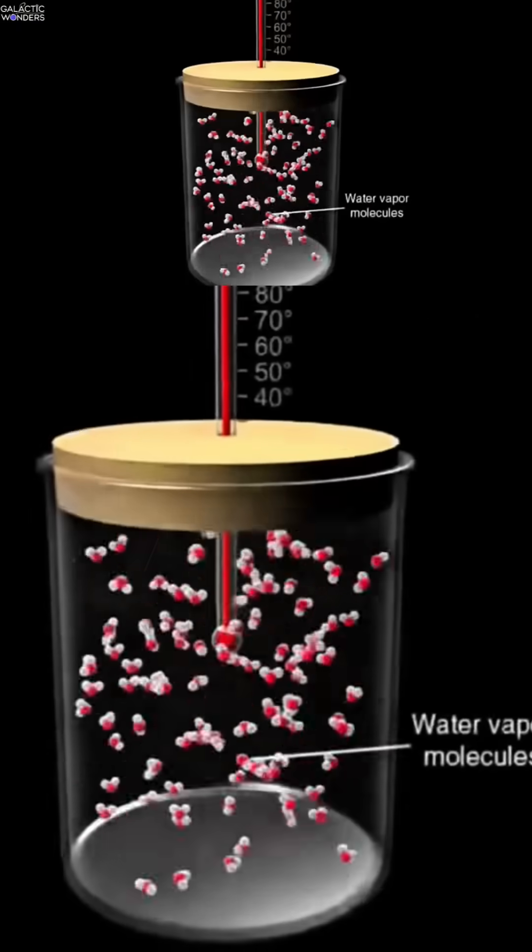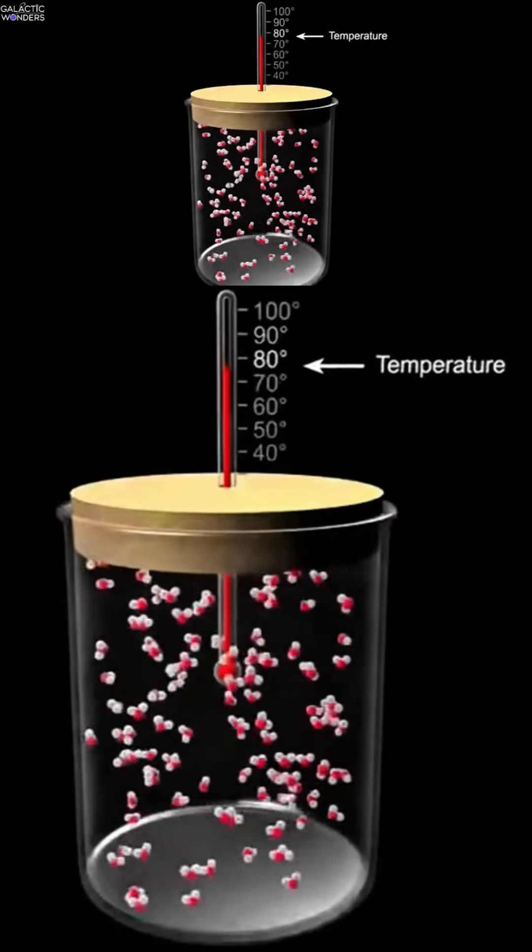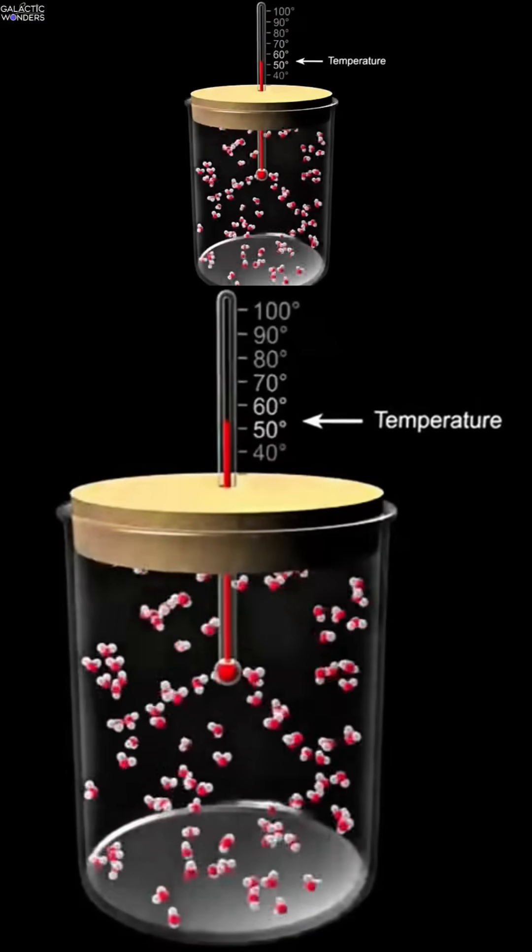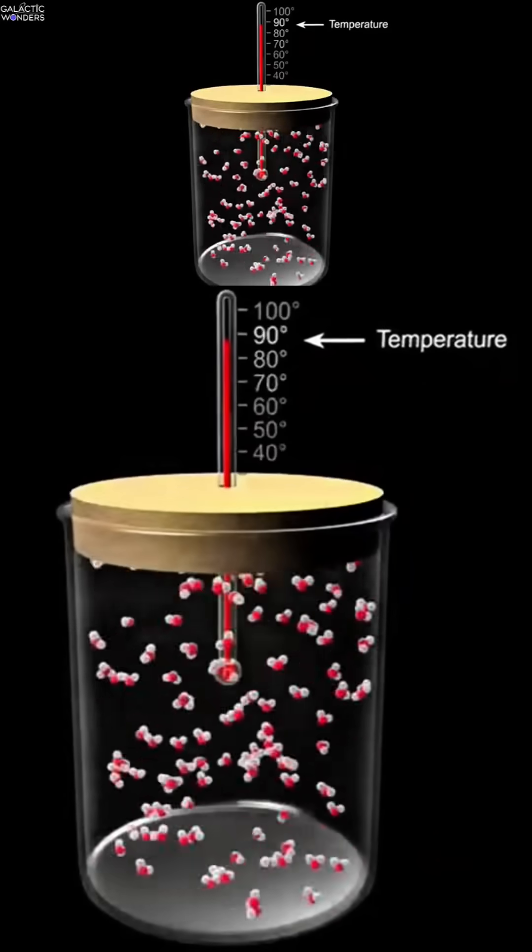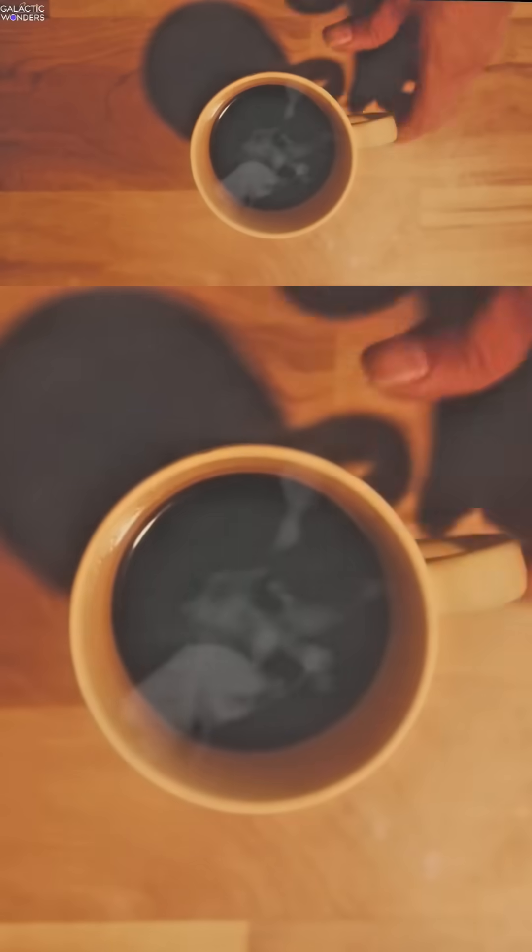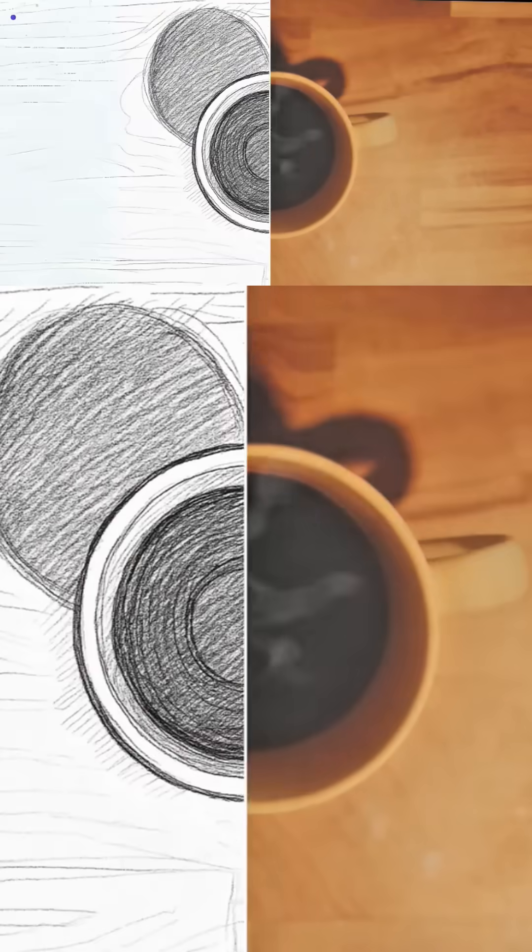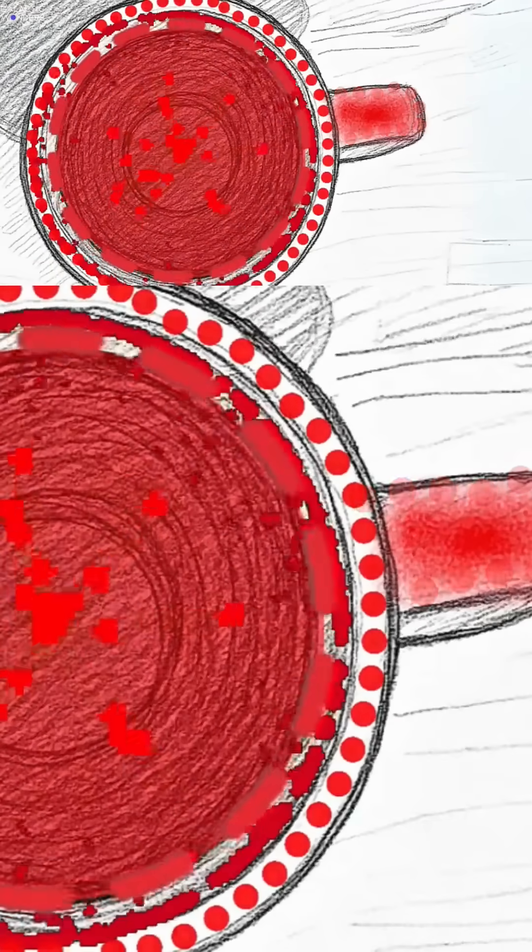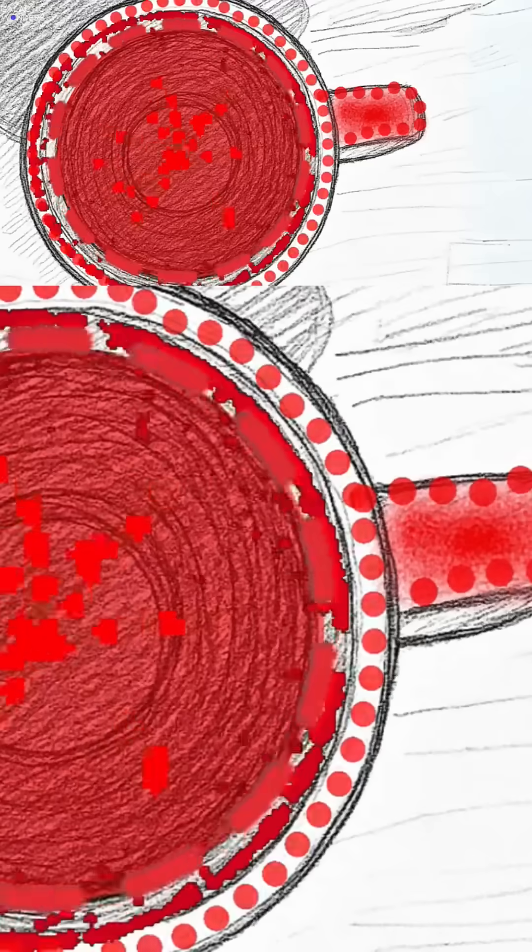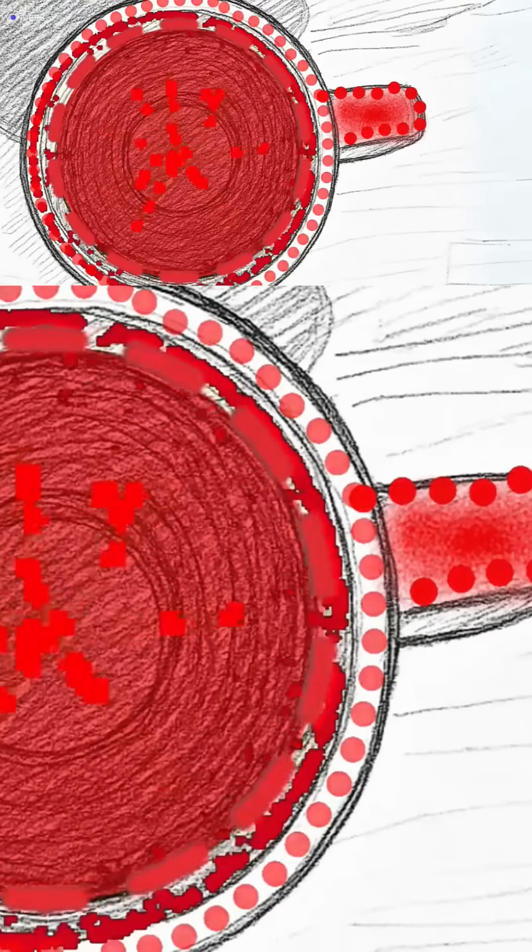See, what we call heat is actually just atoms partying. The hotter something is, the more those atoms are bouncing around like they're at a cosmic rave. When I touch this coffee mug, ouch, still hot, what I'm feeling is literally billions of molecules slam dancing and transferring their energy to my hand.